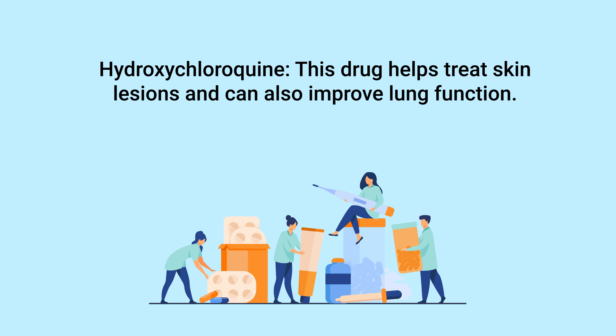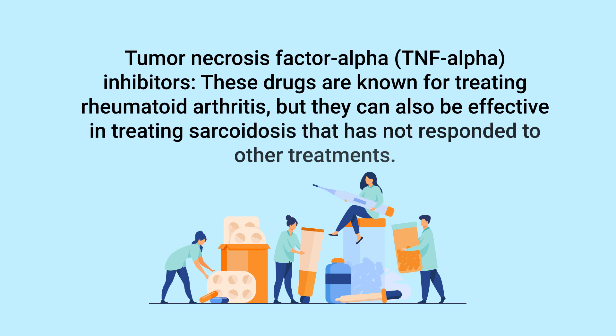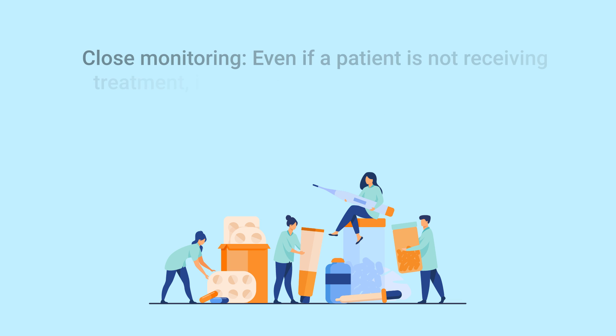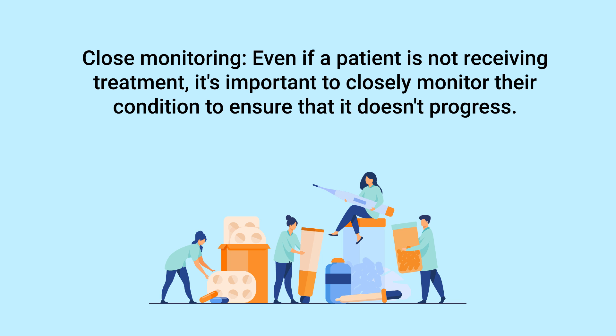Tumor necrosis factor alpha inhibitors are drugs known for treating rheumatoid arthritis, but they can also be effective in treating sarcoidosis that has not responded to other treatments. Last but not least, close monitoring is important — even if a patient is not receiving treatment, it's important to monitor their condition to ensure that it does not progress.